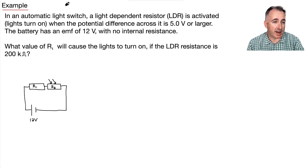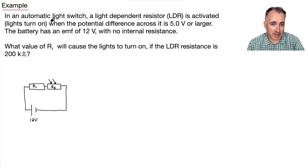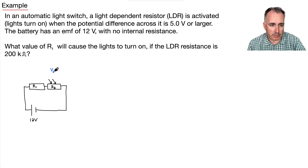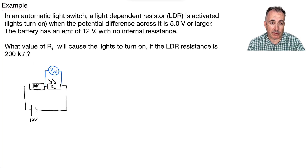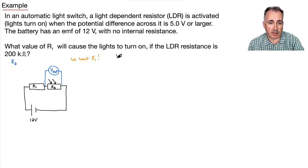Let's look at this example: an automatic light switch with a light-dependent resistor, or LDR. It's activated — meaning the lights turn on — when the potential difference across it is 5 volts or larger. So V_out equals 5 volts. The battery has an EMF of 12 volts with no internal resistance. What value of R1 will cause the lights to turn on if the LDR resistance is 200 kilohms? So R2 is given as 200 kilohms and we need to find R1.